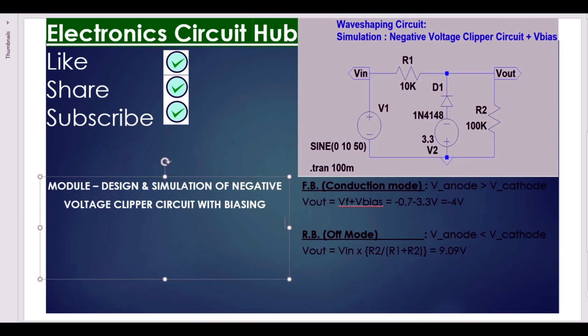not conducting. It is in off mode or reverse bias mode, so there is no current flow through the diode, so the output follows the input. So what is the output voltage? V_out equals to 9.09 volt. You have to apply a potential divider to find the value of V_out.